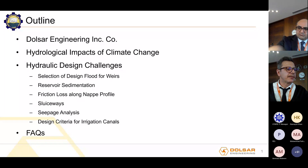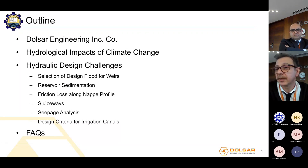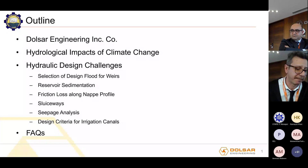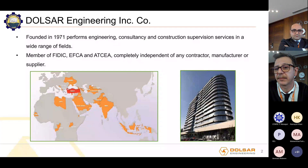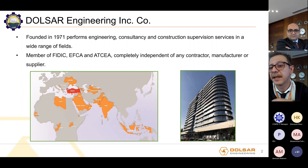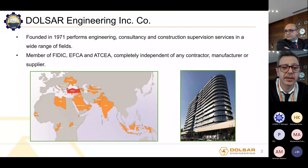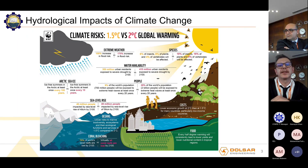In today's presentation we will give a brief introduction about Dosar Engineering, then present hydrological impacts of climate change, hydraulic design creative challenges, and some FAQs. Dosar Engineering was established in 1971 and is the leading engineering and consultancy company of Turkey. Dosar has provided engineering services for dams up to 272 meters in height and cumulative installed capacity of 35,000 megawatts. It is an ENR top 225 listed firm, working in Pakistan since 2011 for clients such as WAPDA, NHA, and KPIDA. Notable projects include Basha Dam, Dasu Dam, Mohmand Dam, Kuram Tangi integrated water resources project, and Havelian-Thakot Expressway.